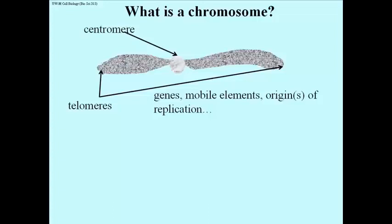Among the components of chromosomes are the sequences in the DNA. And of course the sequences in DNA include genes, which we typically think of as sequences of DNA that code for proteins. You may also recall the term transposons, or mobile elements, which are scattered throughout the genome. In fact, in many higher organisms, mobile elements make up a goodly portion of the genome. You may also recognize origins of replication — sequences at which DNA begins to duplicate itself.